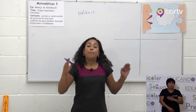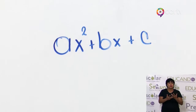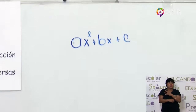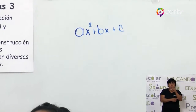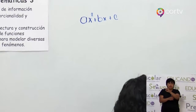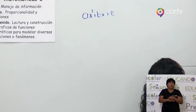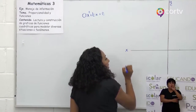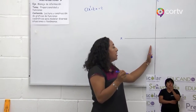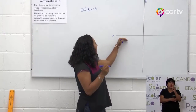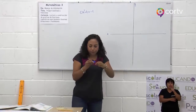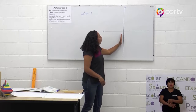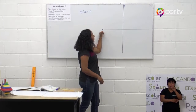Para empezar, vamos a analizar nuestro plano cartesiano. Como sabes, nuestro plano cartesiano tiene dos ejes: un eje vertical y un eje horizontal. El eje vertical se llama y, y el eje horizontal se llama x. El eje de las y es ordenada, y el eje de las x, abscisa.